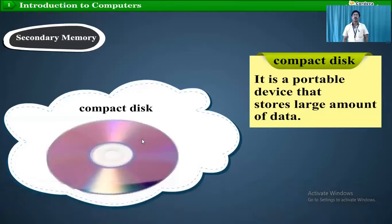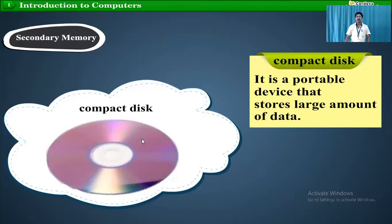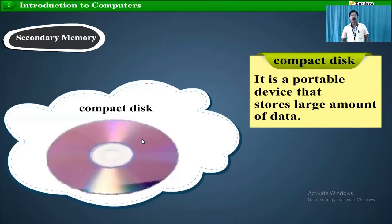A compact disk — CD — stands for compact disk. Its storage size is 750 MB. It is portable, meaning you can carry it anywhere, and it can store a large amount of data up to 750 MB.